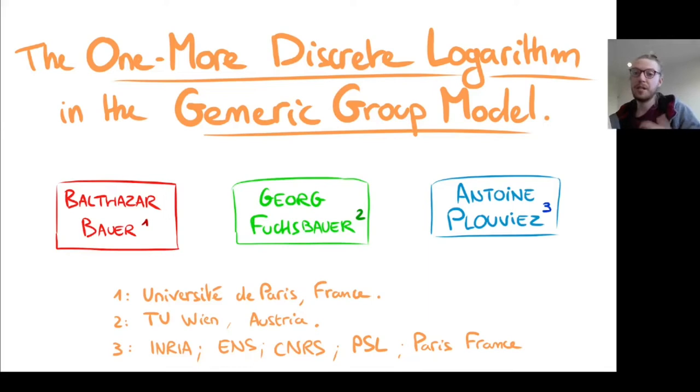We also show that the previous proofs for the one more discrete logarithm security were flawed.